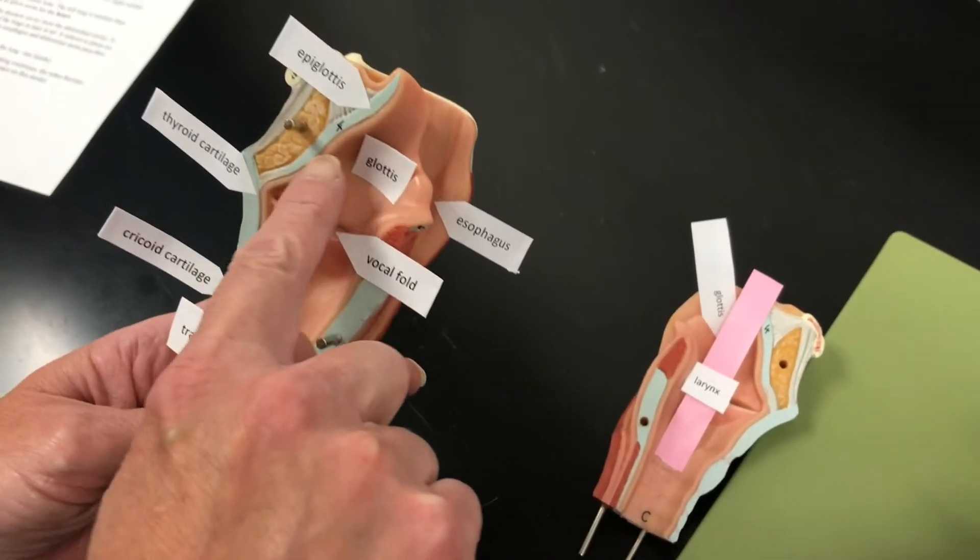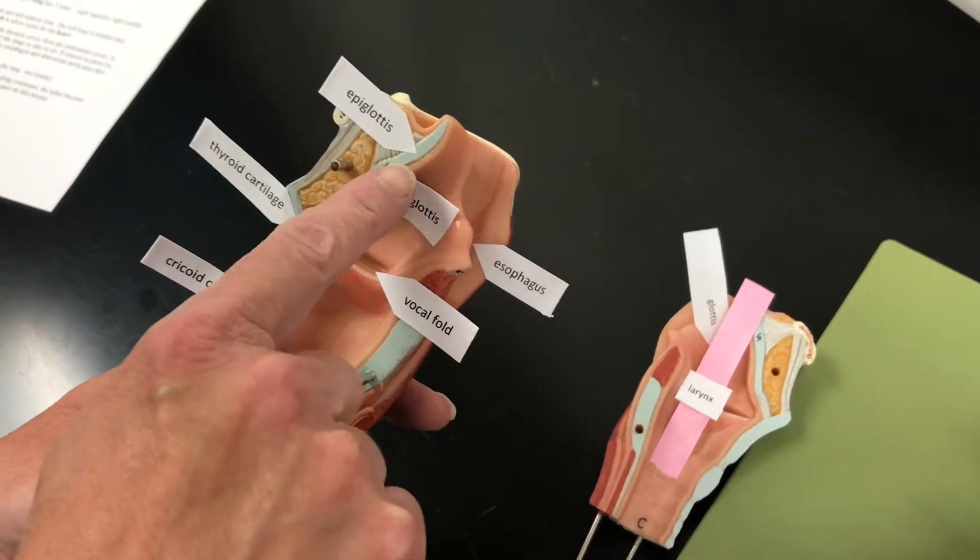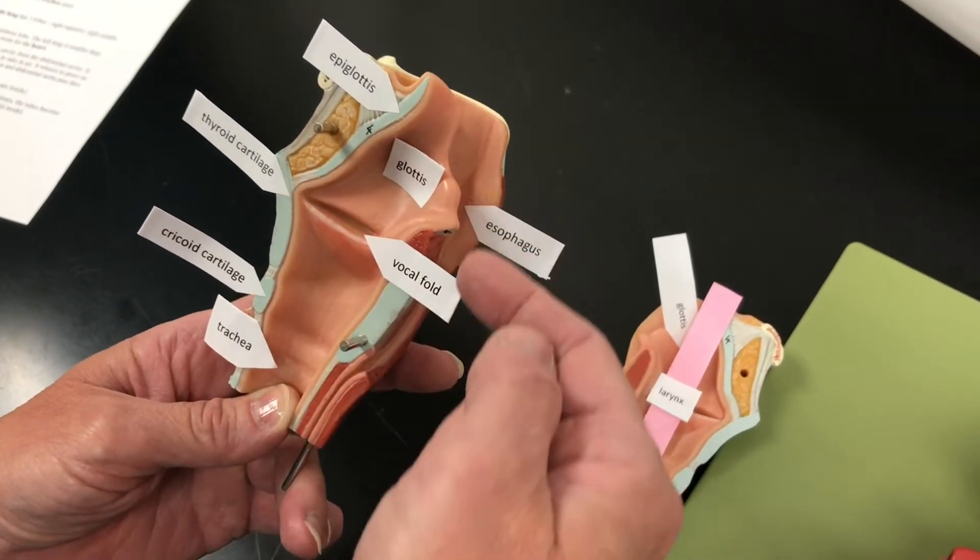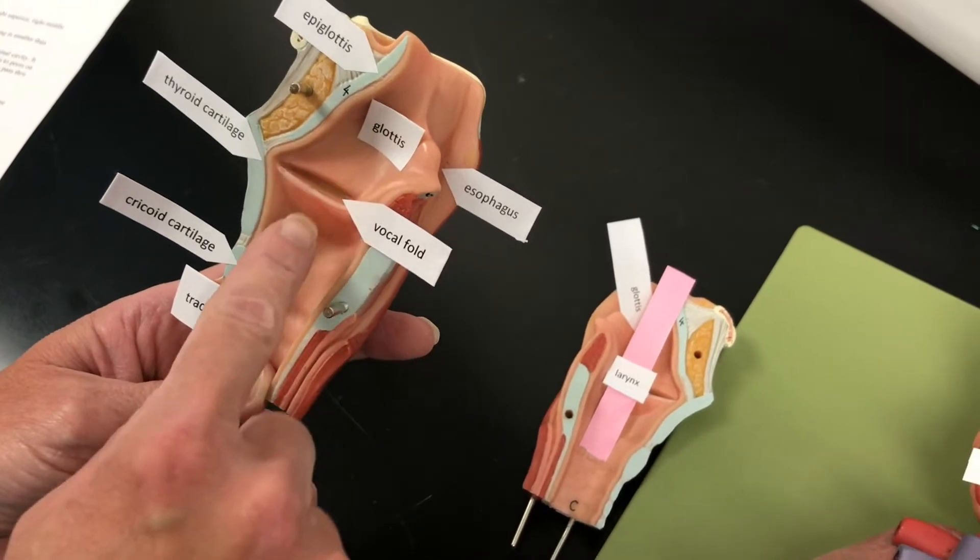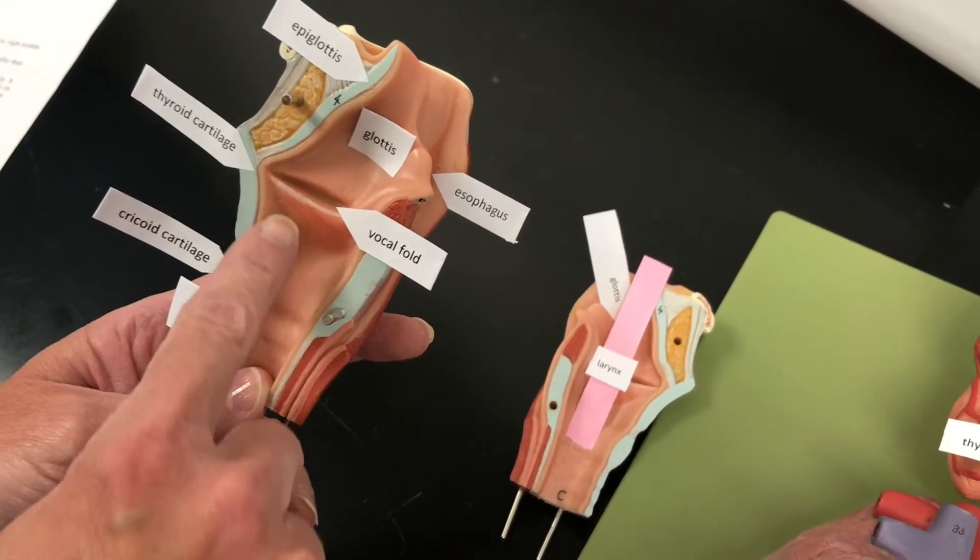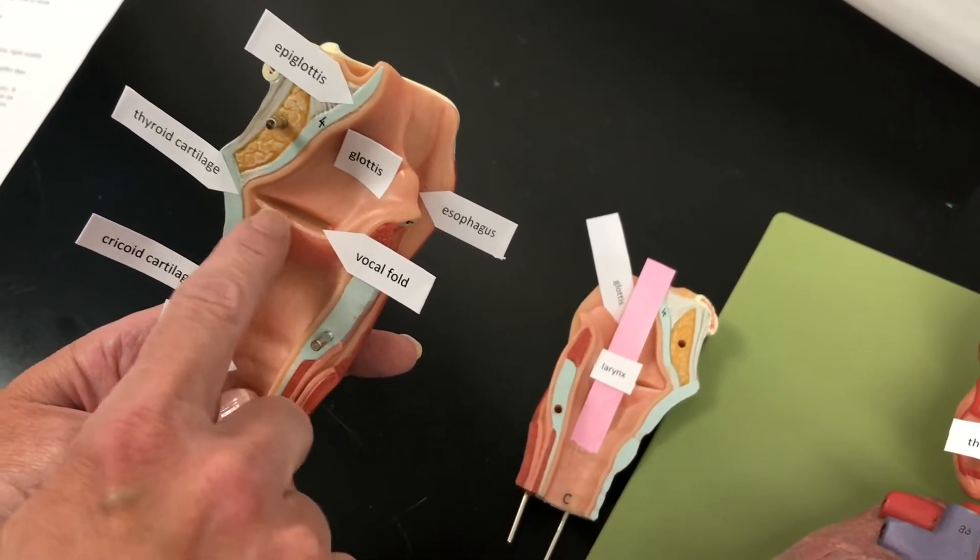So this right here is the epiglottis. The epiglottis covers the glottis when you swallow food and drink so that you won't get any liquid into the lungs. This is the vocal fold right here.